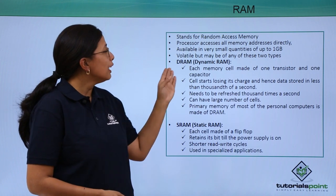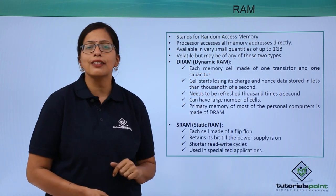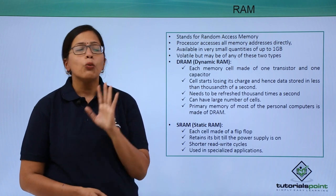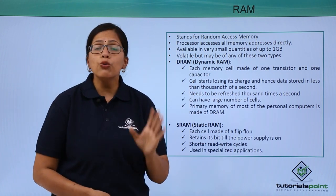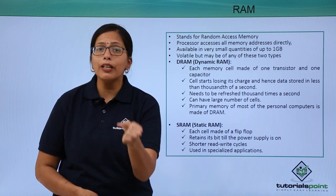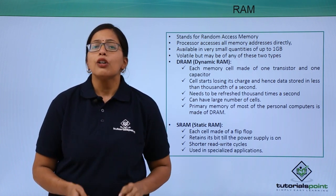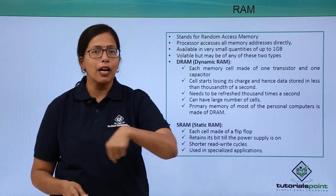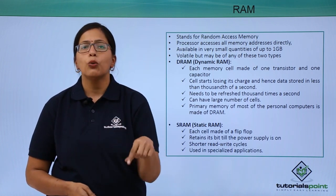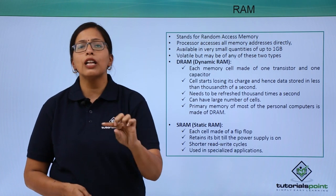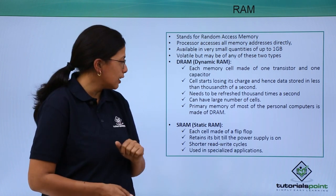What is DRAM? In DRAM, each memory cell is made of one transistor and one capacitor. That means that the cell starts losing its charge the moment the data is stored there. So we have to keep passing the charge and refreshing the memory. We have to keep refreshing it so that the data value is stored there till it is deleted.